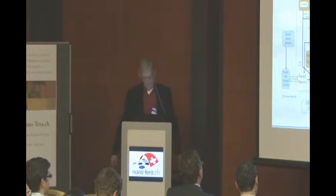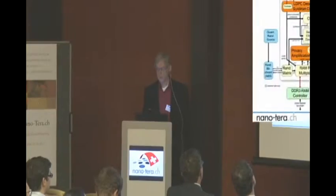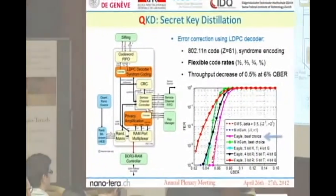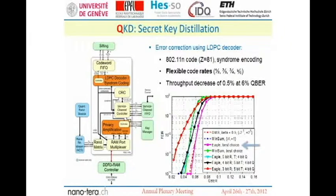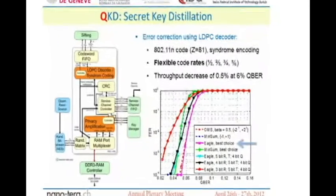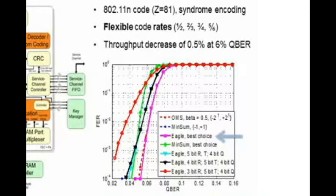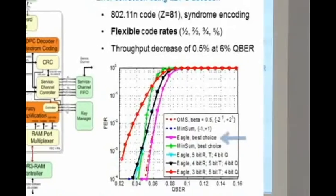This is a block diagram of this system which is implemented in a complex FPGA. One part of this system does the error correction, shown in the upper part of the block diagram, which has been developed at EPFL by Andreas Burg. This graph shows several versions of error corrections that have been investigated and the best one has then been implemented. It works with a very low throughput decrease of only half a percent with a bit error rate of 6%.